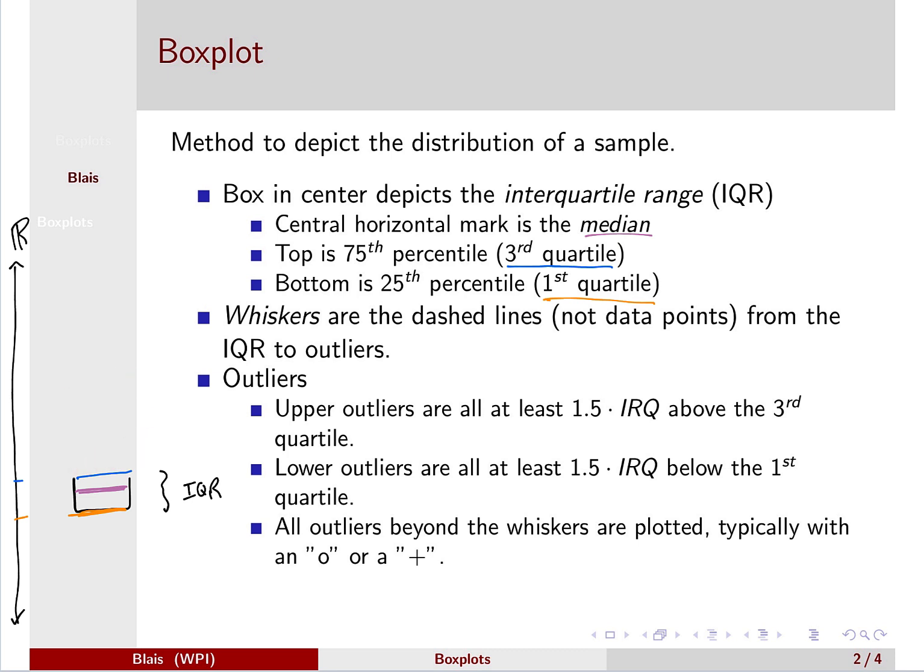So above, we find the first data point that's at least one and a half times the width of this interquartile range above the top of the box. So that first data point will be an outlier and we'll usually use either a plus or an open circle. So again, this would be the first point that's at least one and a half times the width of that interquartile range above that third quartile.